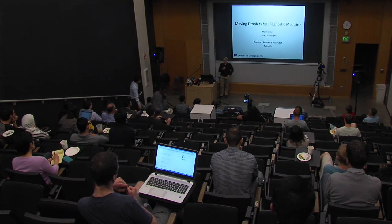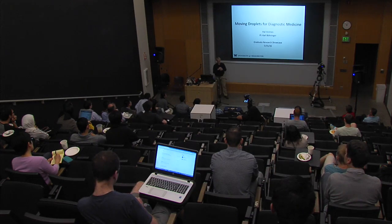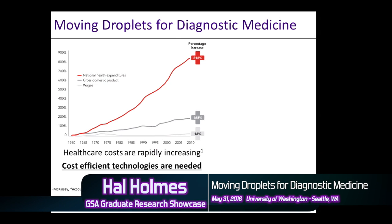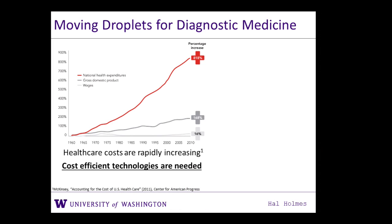Good morning everyone. I'm Hal Holmes, in Dr. Karl Böhringer's lab. I'm working on a droplet liquid handling platform developed in our lab to apply towards medical diagnostics. Healthcare costs are one of the fastest-growing segments of the U.S. economy, currently accounting for almost 18% of GDP, predicted to increase unless measures are taken. There's a major need for innovations that can reduce the cost of delivering healthcare, and we believe reducing the cost and improving the efficiency of diagnostic platforms can really have an impact.